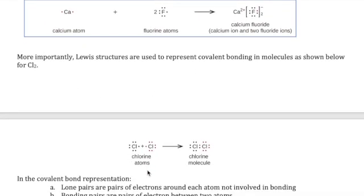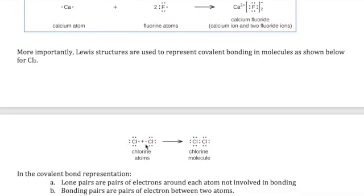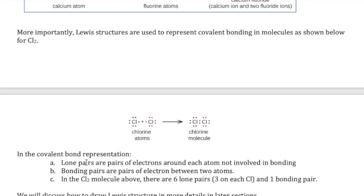For covalent bonding, here's an example using Cl₂. Both chlorine atoms are non-metals, so they share electrons to make what we call an octet. The chlorine molecule is illustrated with two chlorine symbols: dots representing one chlorine, dots representing the other, and the shared electrons drawn right in between the two chlorine symbols.